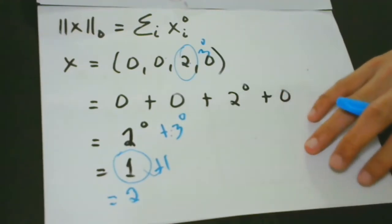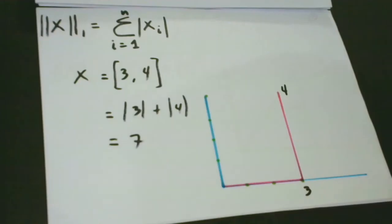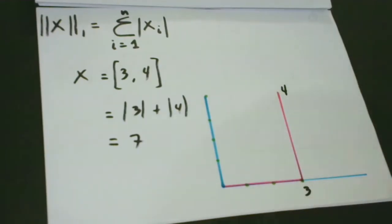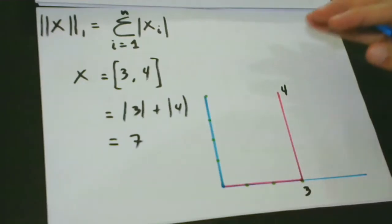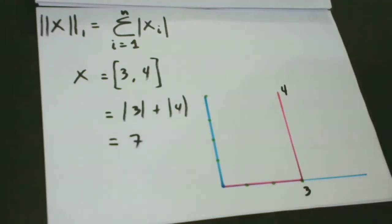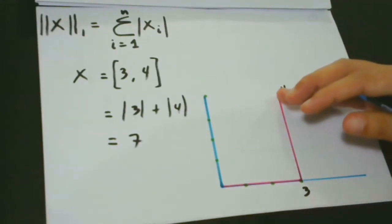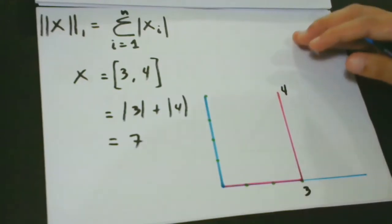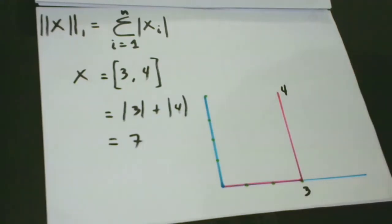The L1 norm is often used as a substitute for the number of non-zero entries. It is also known as the Manhattan distance or taxicab norm. L1 norm is commonly used in machine learning and deep learning when the difference between zero and non-zero elements is very important — no matter how small, even if it's just 0.001, it really matters. When we move from zero for any element, the L1 norm increases.